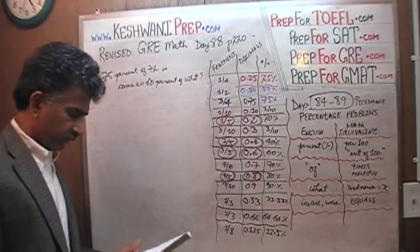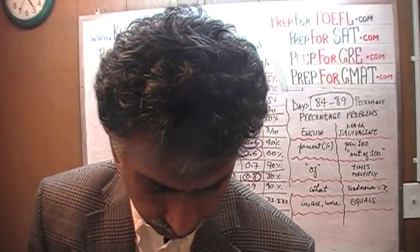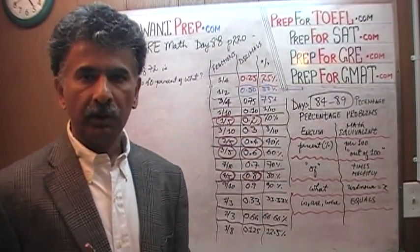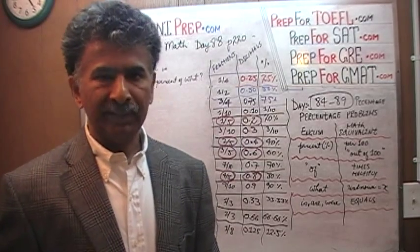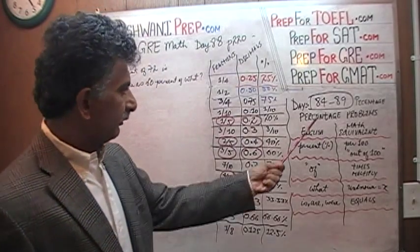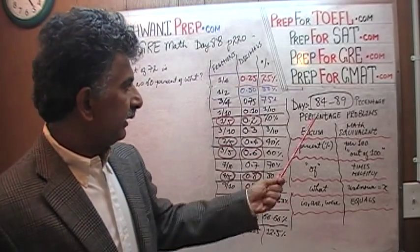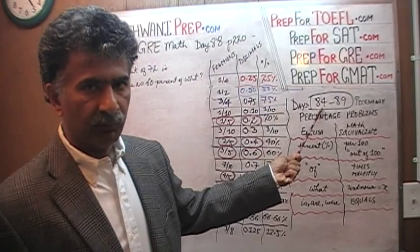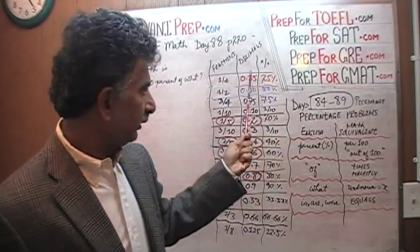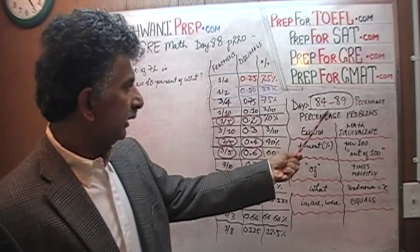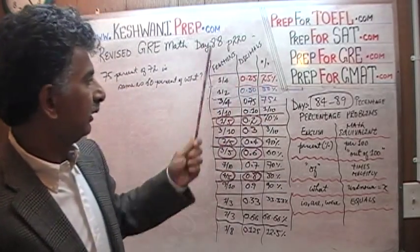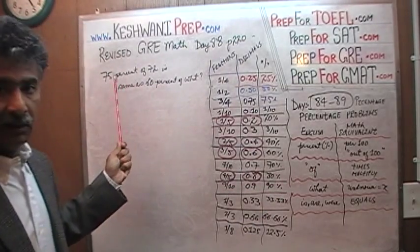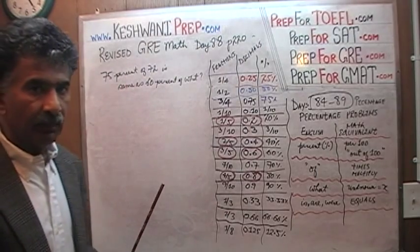Very simple, very straightforward question. The key, as I've explained over the last couple of days, is to make sure that you set up the right equation — the rest is easy. This is the equation dictionary we've been using. We started percentage problems on day number 84, so if you haven't watched those videos, day 84 goes into detail on the two tables you see here. Then days 85, 86, 87, and today is day 88.